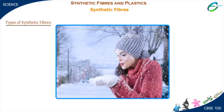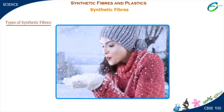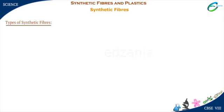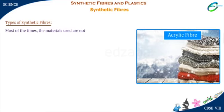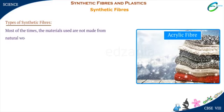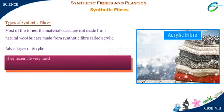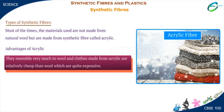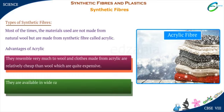In the winter season, we cover ourselves with sweaters and blankets to keep us warm. Most of the times, the materials that we use are not made from natural wool but are prepared from a synthetic fiber called acrylic. They resemble very much to wool, and clothes made from acrylic are relatively cheap compared to wool. They are available in a wide range of colors and are durable, which makes them more popular than natural fibers.